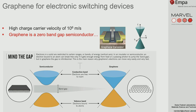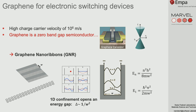The high charge carrier mobilities in graphene make it appealing for applications in information technologies—for example, field-effect transistors. But there is a problem: graphene does not have a band gap. The question is, can we open a gap in graphene and use it for transistors? The answer is yes. There are several ways to open a gap in graphene.